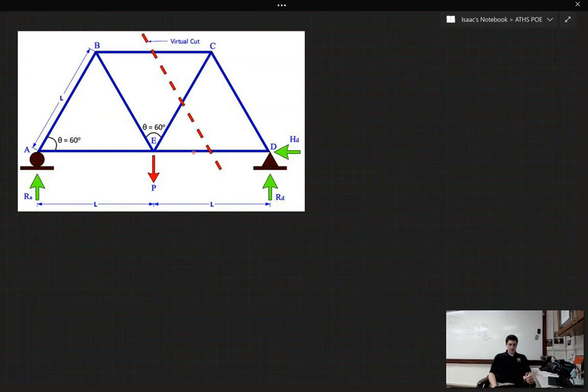We've got each of our members has a length of L, and we also have a couple of these green arrows which we'll talk about why those are there when we get into trusses in a couple of days.